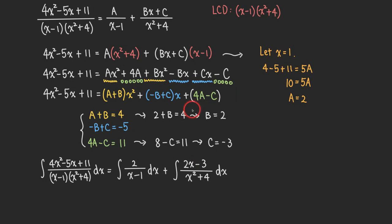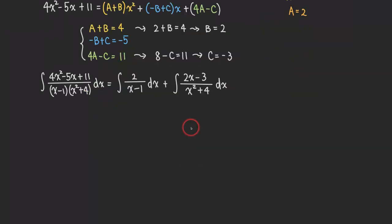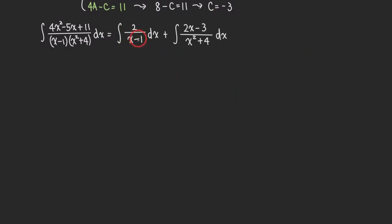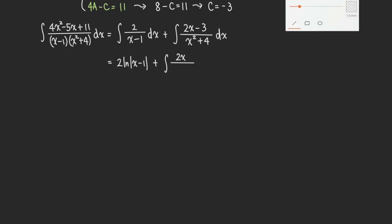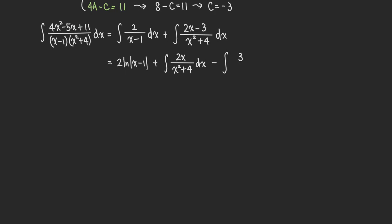So now we can focus on the integration. This first one we can integrate directly, giving 2 ln of absolute value of x minus 1. For the second integral, because there are two terms in the numerator, it's a good idea to split it into two: the integral of 2x over x squared plus 4 dx, minus the integral of 3 over x squared plus 4 dx.